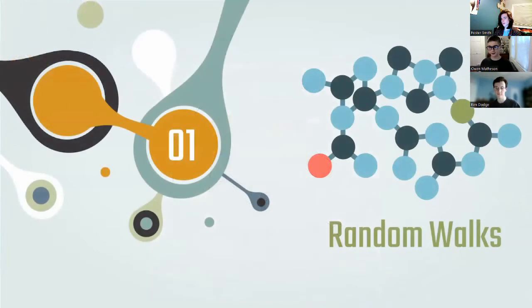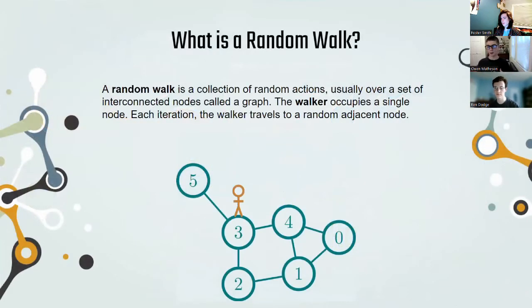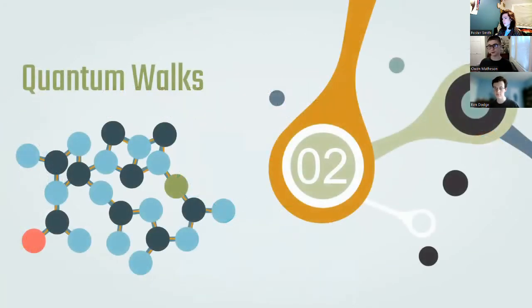Quantum walks are the quantum version of random walks. Random walks are when a walker is going to take random steps around a graph. It's going to jump in a random direction from node to node like this every single iteration. Quantum walks are the quantum version of those random walks.